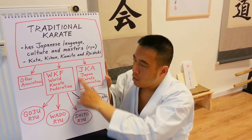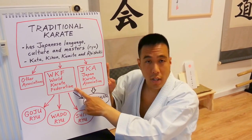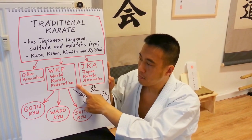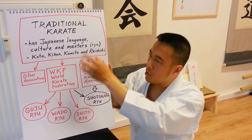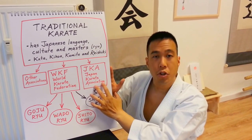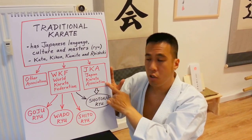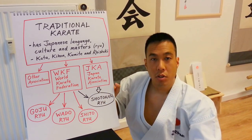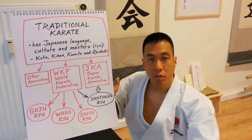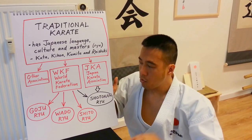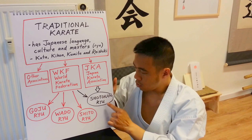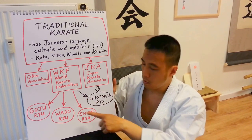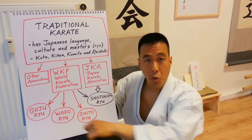There is one major world organization for traditional karate: the WKF, World Karate Federation. Our specific group, the JKA or Japan Karate Association, is a member of the World Karate Federation. It recognizes four major style families: Shotokan Ryu, Shito Ryu, Wado Ryu, and Goju Ryu. Of these four, Shotokan is the largest.